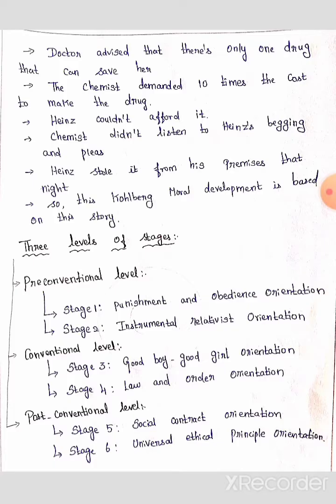Kohlberg's moral development is based on this story. It has three levels, and each level has two stages, giving six stages total. The first level is the pre-conventional level, the second is the conventional level, and the third is the post-conventional level. Pre-conventional level: Stage 1 is punishment and obedience orientation, Stage 2 is instrumental relativist orientation. Conventional level: Stage 3 is good boy/good girl orientation, Stage 4 is law and order orientation. Post-conventional level: Stage 5 is social contract orientation, Stage 6 is universal ethical principle orientation.